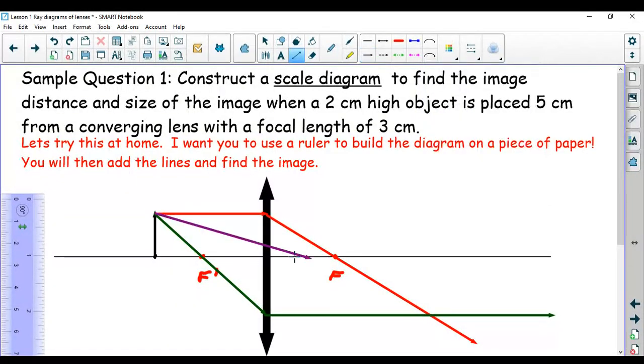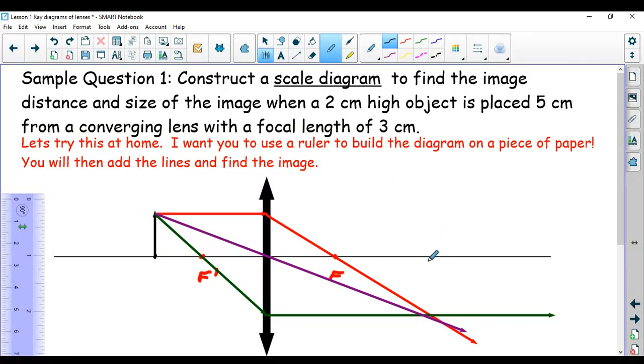And then rule number three is also no problem. Top of the object, right through the middle, and good to go. I can now describe my image, because I can draw it in, and I can describe my image, and go from there, just like we've been doing before. Put in your image. And I would say this image is larger, inverted. I would say it's about the same distance, and it is definitely real. See you later.